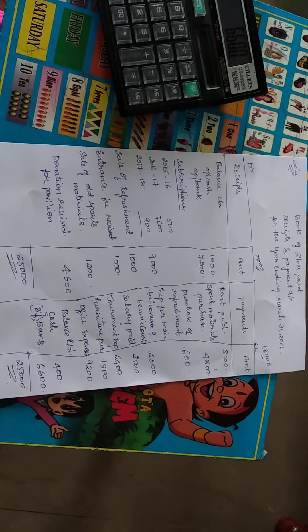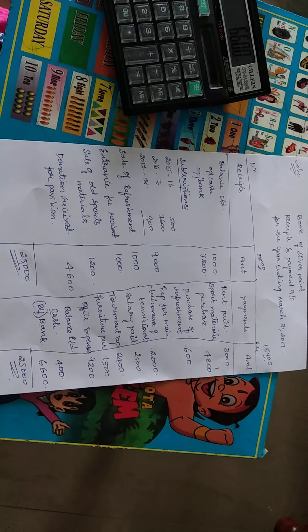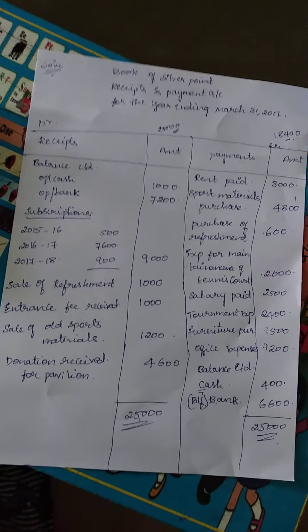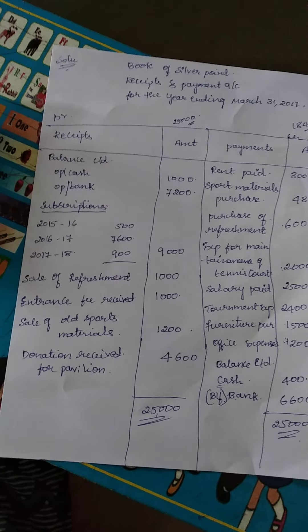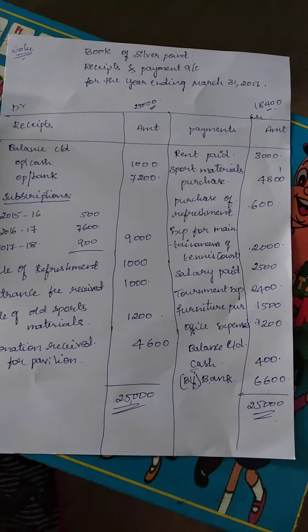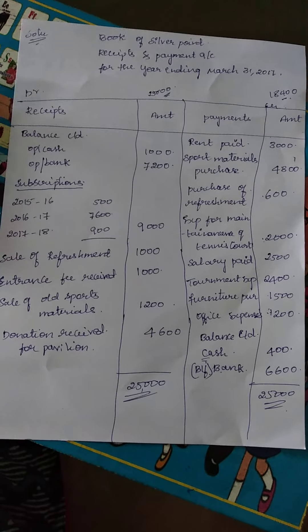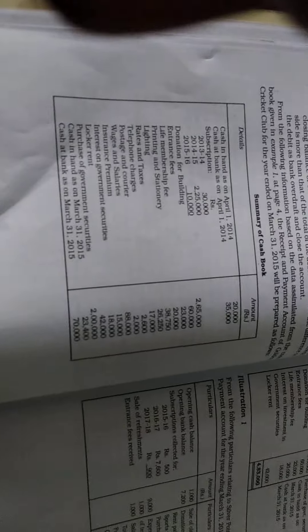Hope you understood this problem. Please take a screenshot of the solution and write it in your notes. This is all about the receipts and payment account. Write the question, solve the problem, and make sure you have taken the screenshot. Now I am giving you a homework problem under receipts and payments. As I said, the receipts and payment account is prepared on the basis of a summary of the cash book.